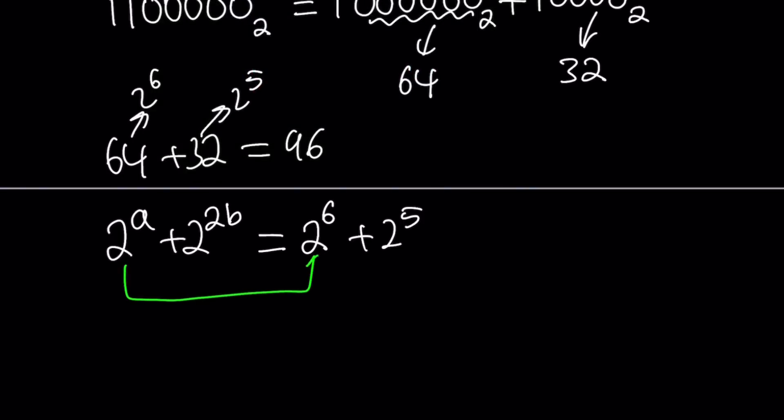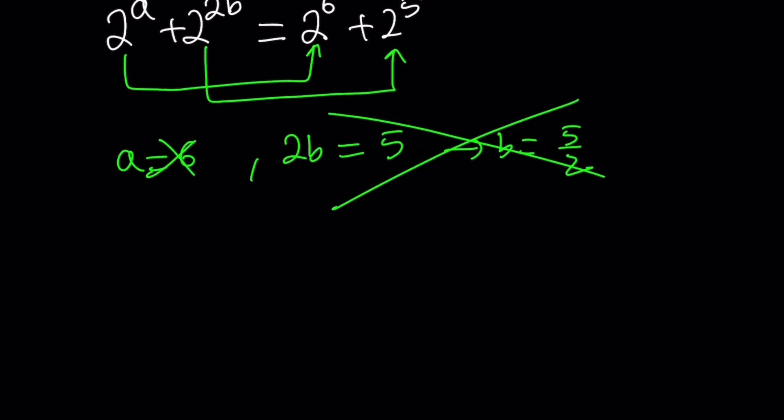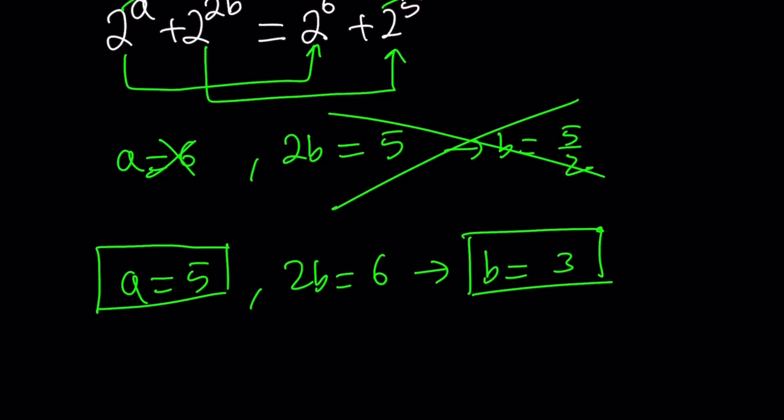So let's take a look. So from here we can say, a is equal to 6 and 2b equals 5. But this is problematic because this gives us b equals 5 halves, but we're looking for integer solutions. So a equals 6 is not going to work. So we're going to look at it the other way around, which is 2 to the power a equals 2 to the 5th power. So this means a equals 5 and 2b equals 6, from which we get b equals 3. So this looks like a working solution. Actually, it does. 5, 3 is a solution.